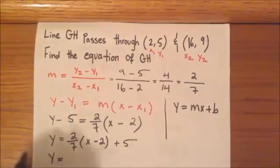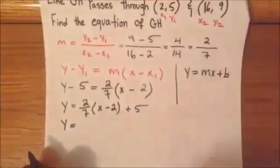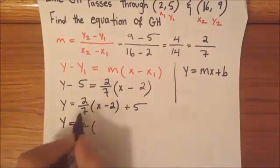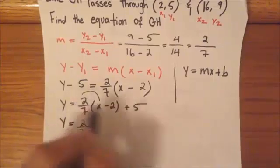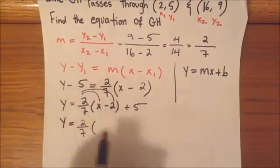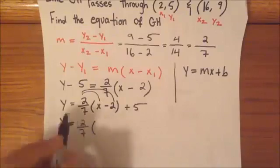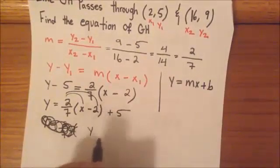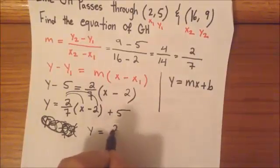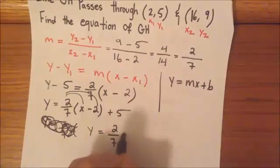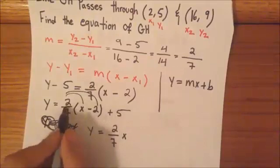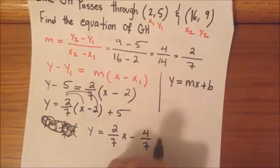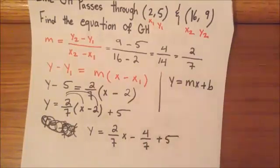And now we have to multiply or distribute 2 over 7 here. So, we have y equals 2 over 7. It's going to be times this x and then it's going to be times 2. So, it's going to be 2 over 7 x here. I'll write this again. So, it's going to be y equals 2 over 7 x.